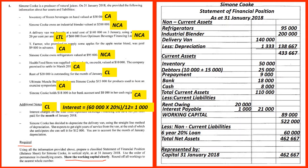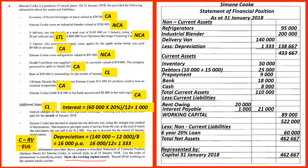Simone Cook has decided to depreciate the delivery van using the straight-line method. She expects to get eight years of service from the van, at the end of which she can sell it for 12,000. We are to account for one month of January depreciation. The straight-line formula is: cost minus residual value, divided by the estimated useful life, which gives 16,000 per annum.